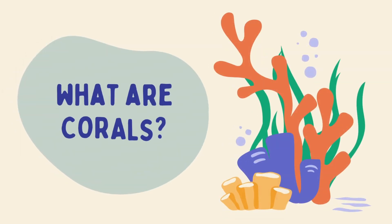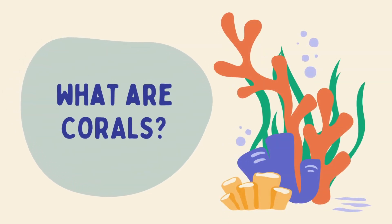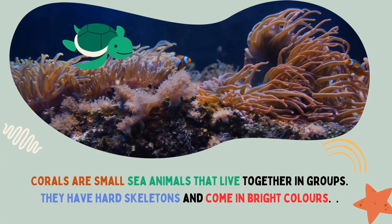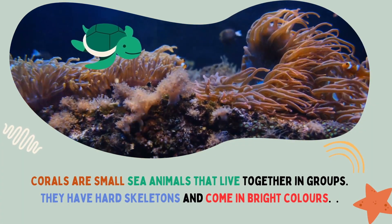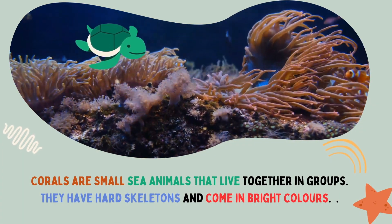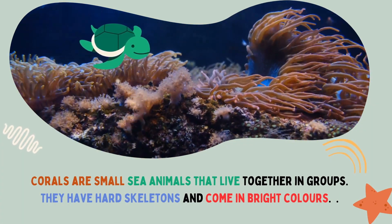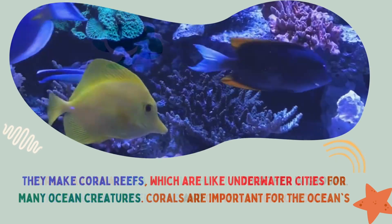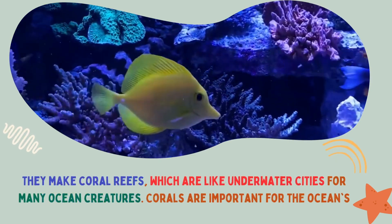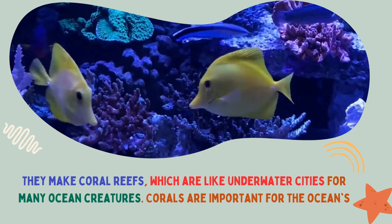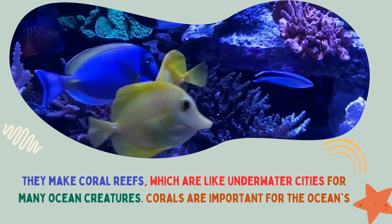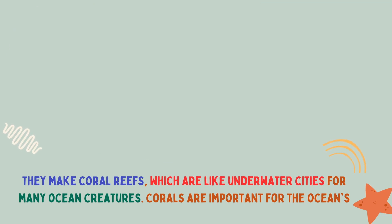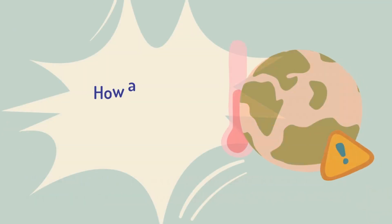So what are corals? Corals are small sea animals that live together in groups. They have hard skeletons and come in bright colors. They make coral reefs, which are like underwater cities for many ocean creatures. Corals are important for the oceans.